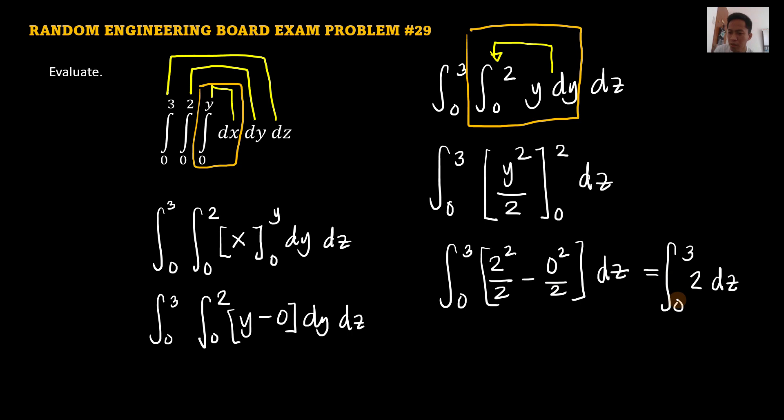And then we evaluate now the last derivative of dz. We evaluate that, that is 2 times integral of dz, so that is z. 2 times z, and then that is from 0 to 3. And then we just evaluate that. 2 times upper limit minus lower limit, 0. So therefore, that is 2 times 3, that is 6. Therefore, the equivalent of this definite multiple integral, this triple integral, is equal to 6. So that is the final answer for this problem.